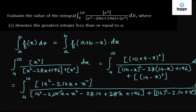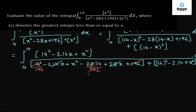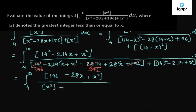The 28x terms cancel with each other. 14 squared is 196, and 28 times 14 is 392. Then 196 plus 196 equals 392, so these three terms cancel. The integral becomes integration from limits 4 to 10 of: greatest integer of (196 minus 28x plus x squared) divided by greatest integer of x squared plus greatest integer of (196 minus 28x plus x squared), dx.